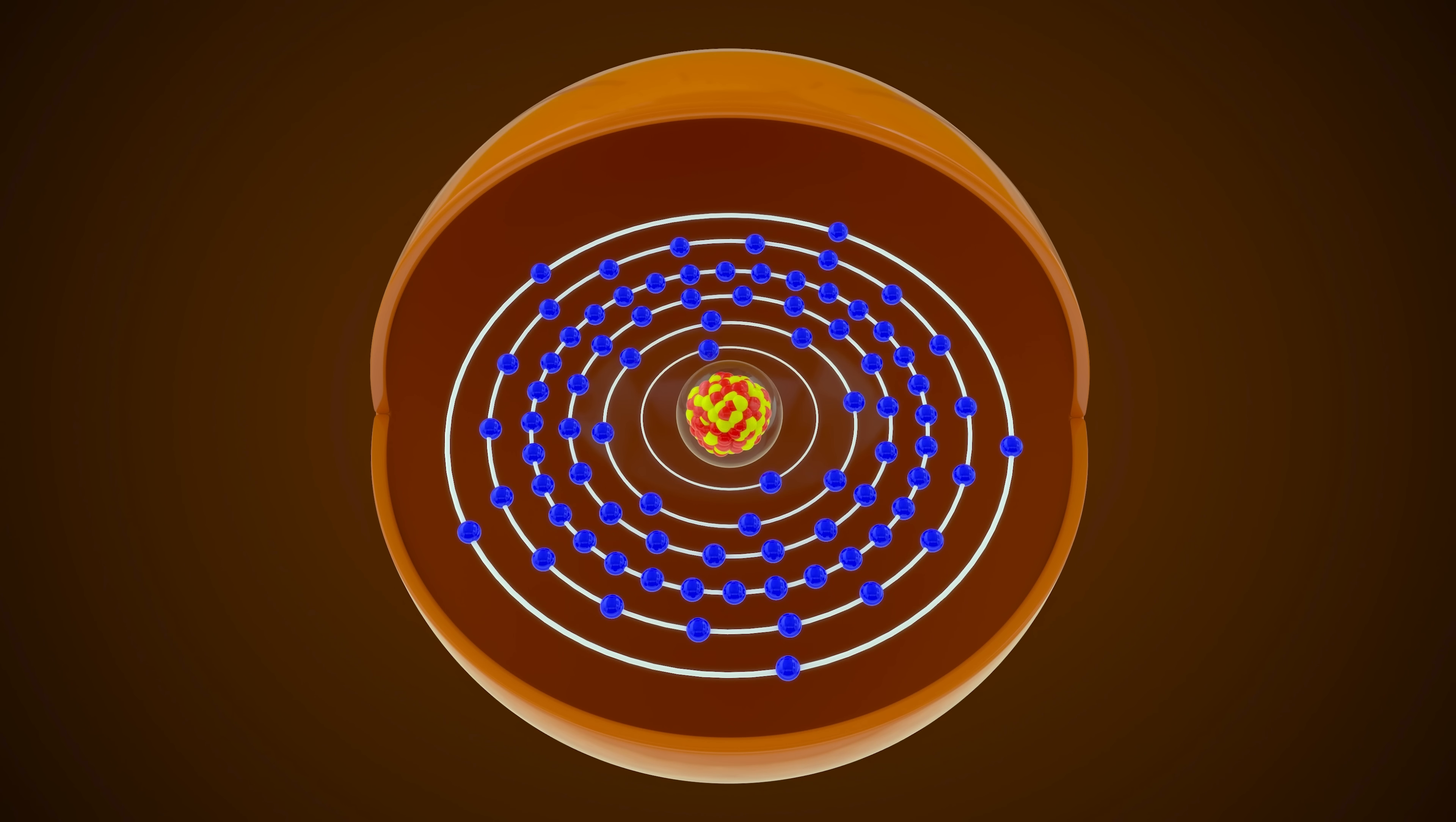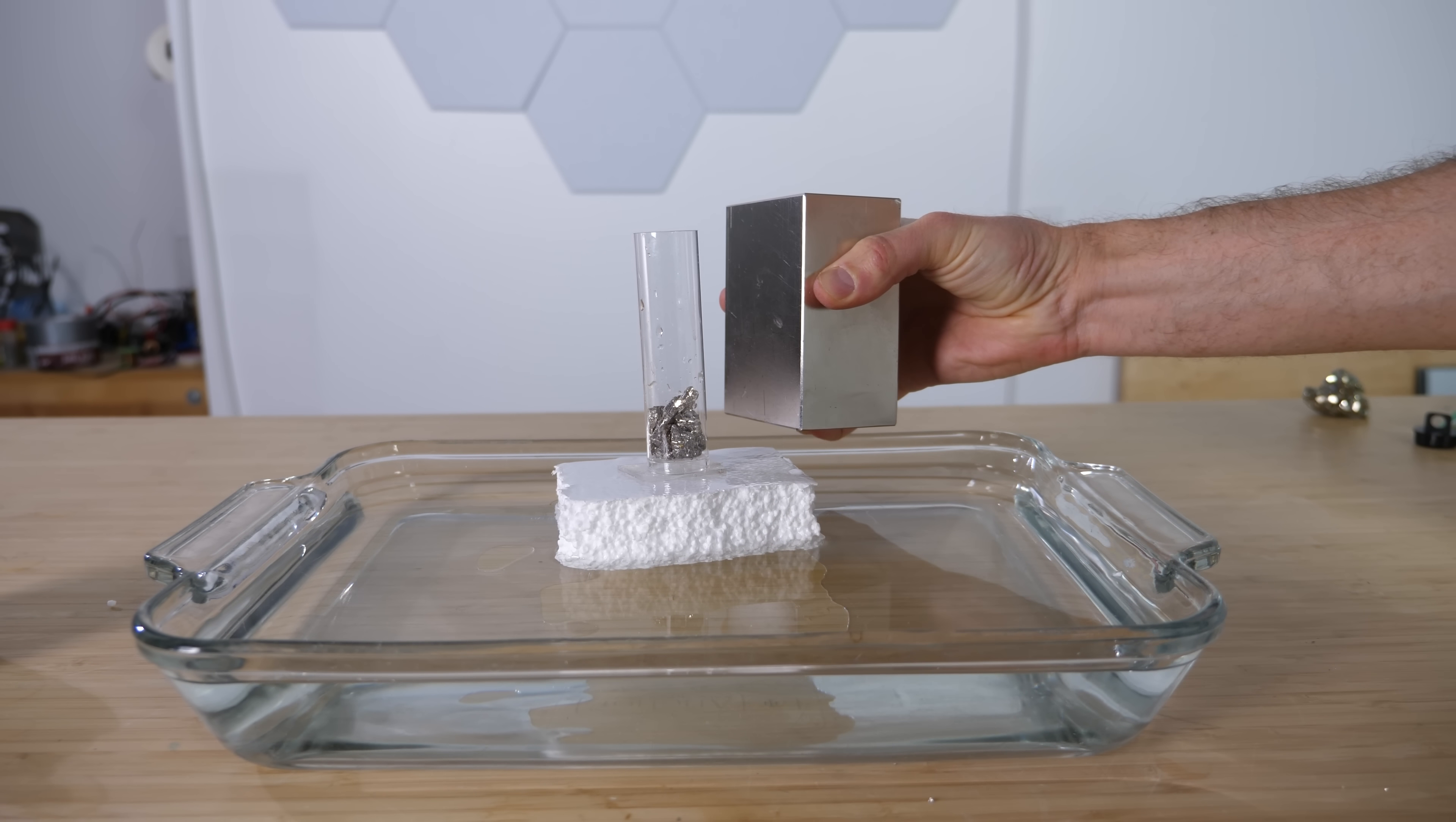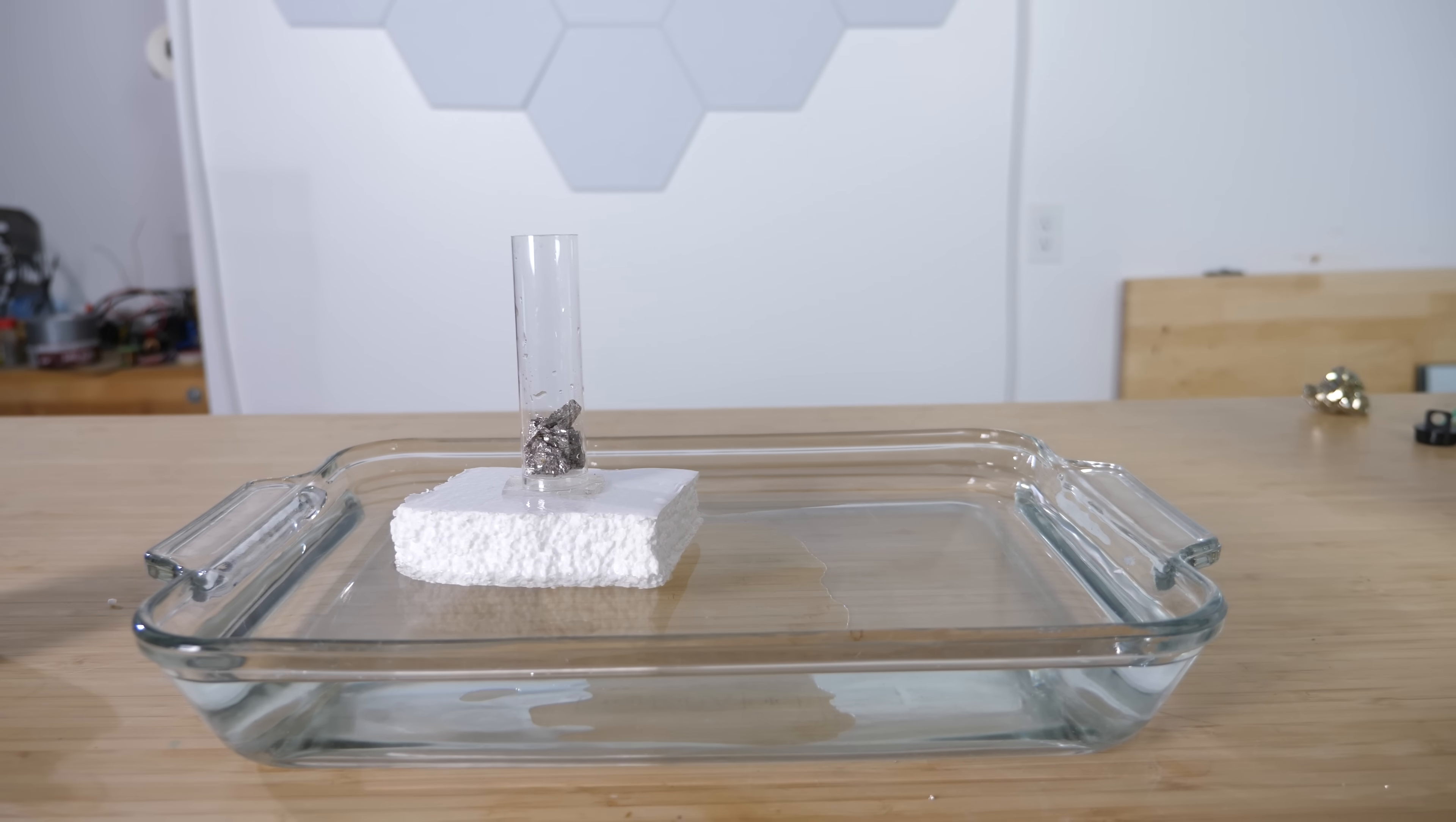Bismuth is a large atom with 83 electrons, and its outermost shell, the 6p orbital, has three unpaired electrons. These should act like tiny magnets making bismuth paramagnetic, but clearly it's behaving as a diamagnet instead, being pushed away from my magnet. This confused scientists for years, until Paul Dirac combined Einstein's special relativity with quantum mechanics.